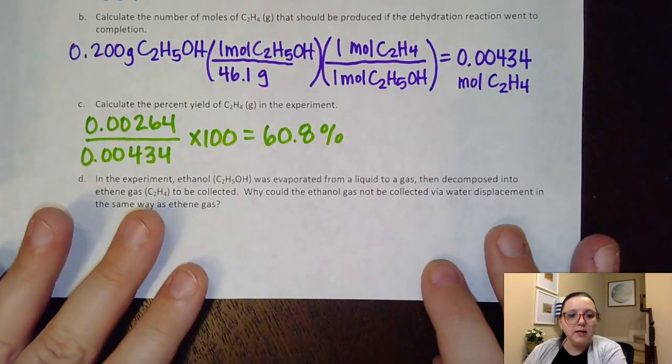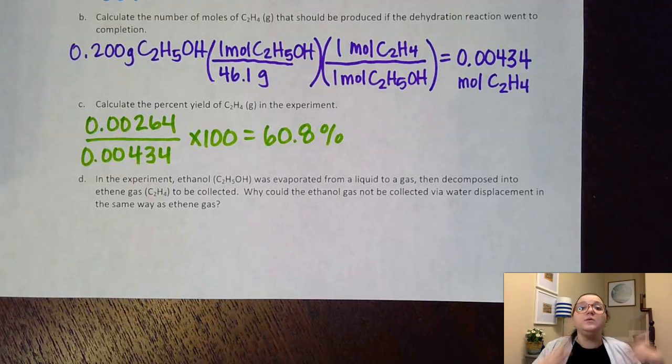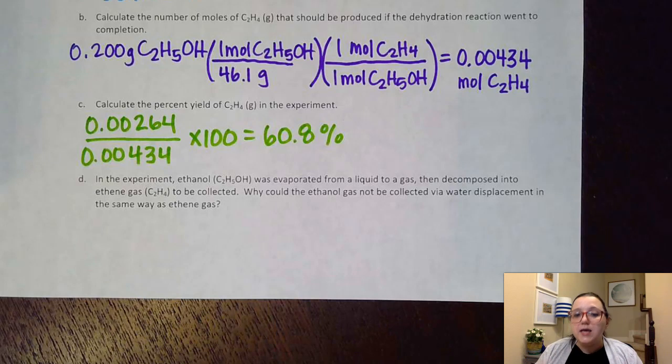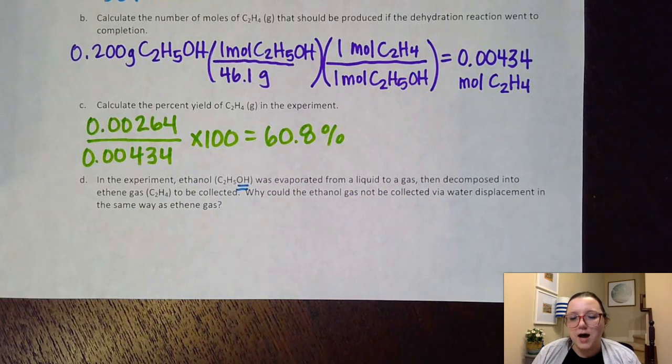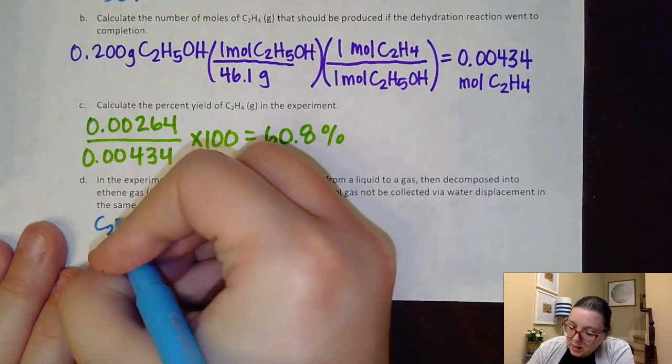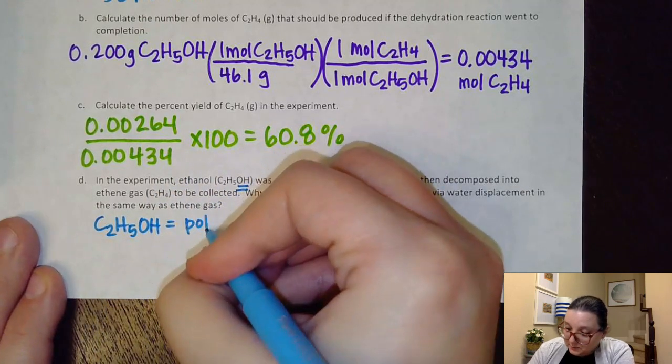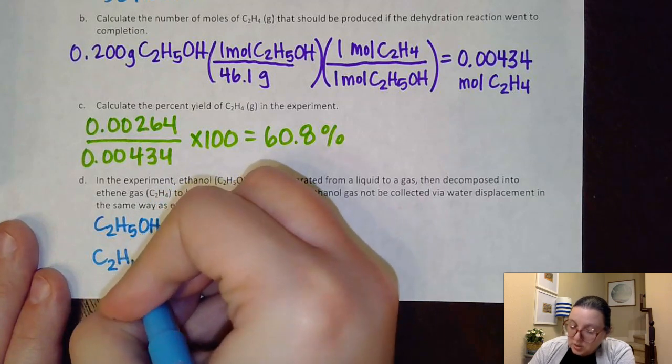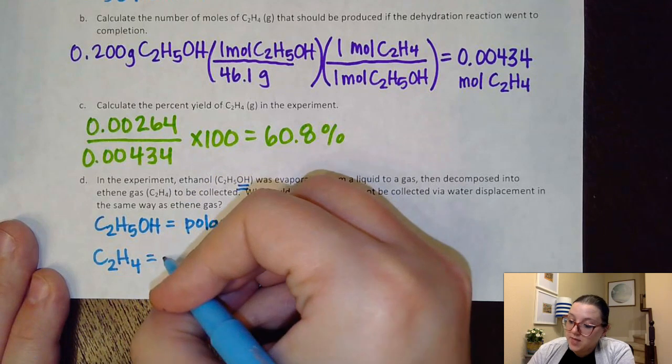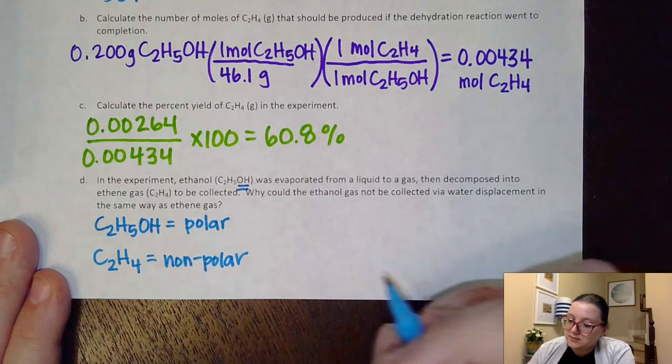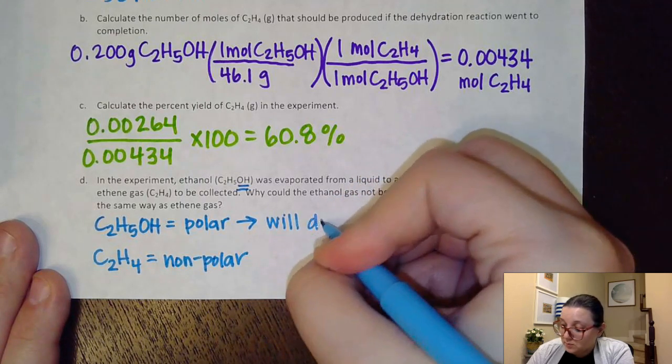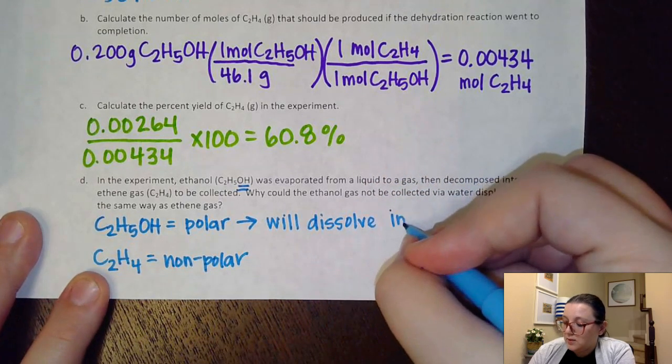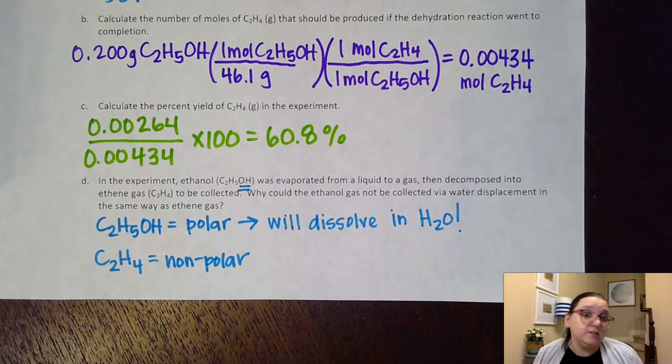Last but not least on here, it says, in the experiment, ethanol was evaporated from a liquid to a gas. And then it was decomposed. Then the reaction took place into ethene gas. It says, why could the ethanol gas not be collected via water displacement in the same way as ethene gas? Well, look at the ethanol gas. Hopefully, we notice that it has OH on it, which means it's not just carbons and hydrogens at that point. And so that would mean that C2H5OH is a polar gas. However, C2H4, that's just carbons and hydrogens. And as we've talked about previously, that would mean that that gas is nonpolar. And so because the C2H5OH is polar, it cannot be used in water displacement because it will dissolve in the water. So collecting it via water displacement wouldn't really work.